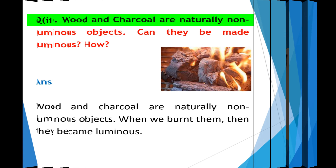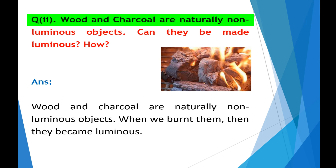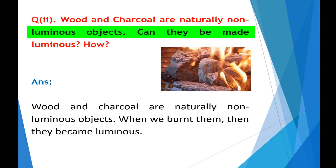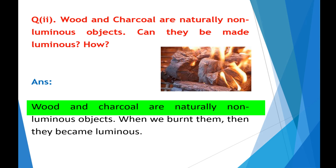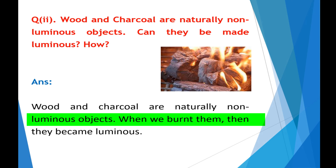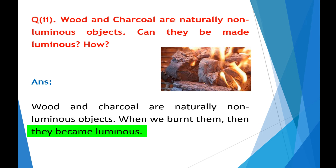Question No. 2: Wood and charcoal are naturally non-luminous objects. Can they be made luminous? How? Answer: Wood and charcoal are naturally non-luminous objects. When we burn them, then they become luminous.